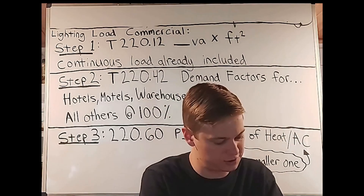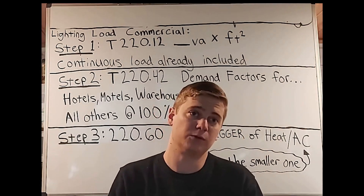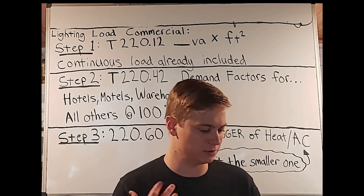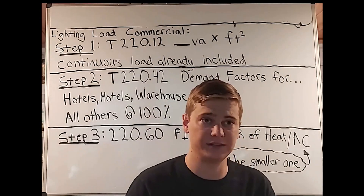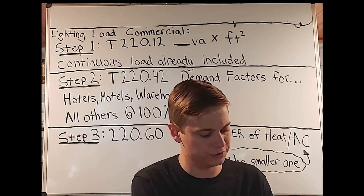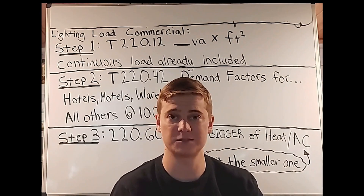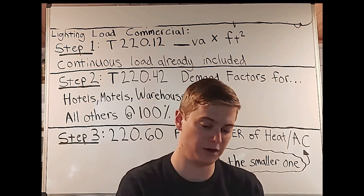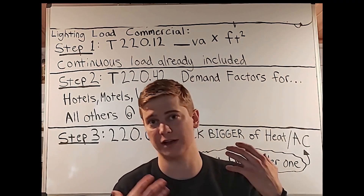Going back to article 220.12, we have the table, but when we have a table we should always read the article that goes along with it. Most of the time it's not all that much — I'm talking about at least reading the first section under 220.12. This is because sometimes you're going to find information you won't find on your table alone, and you might also get directions on how to use the table.